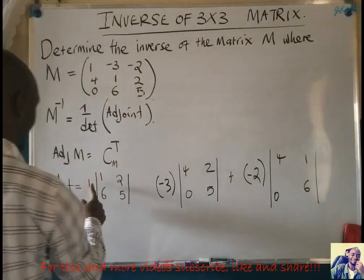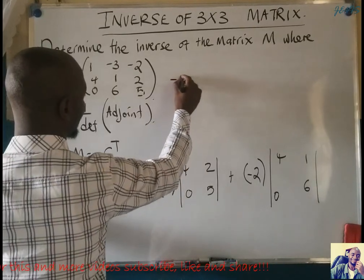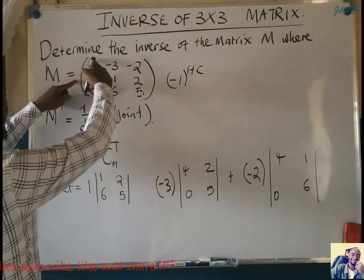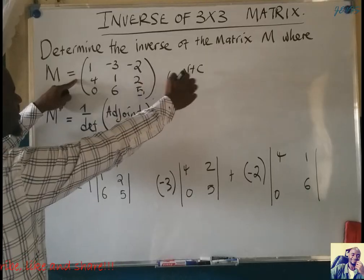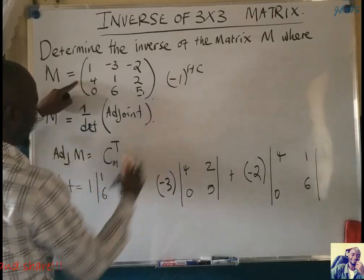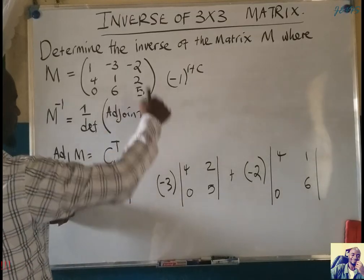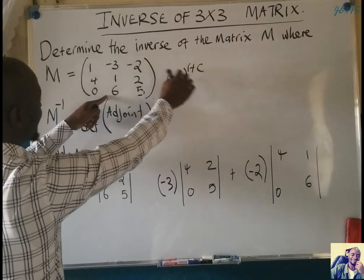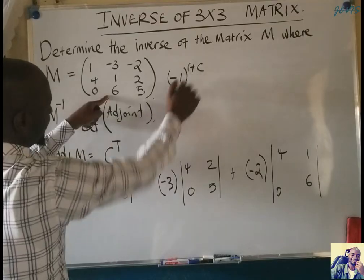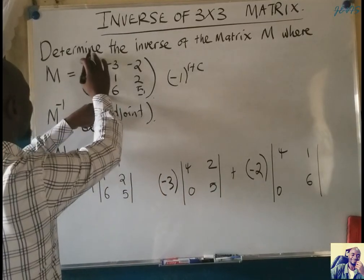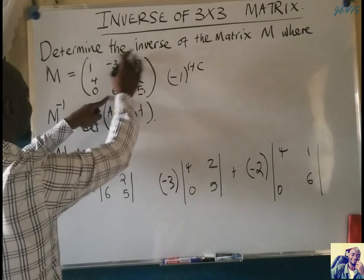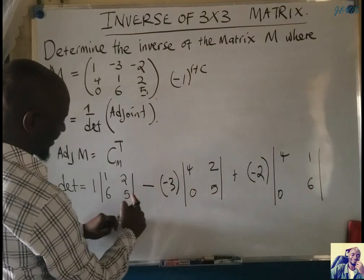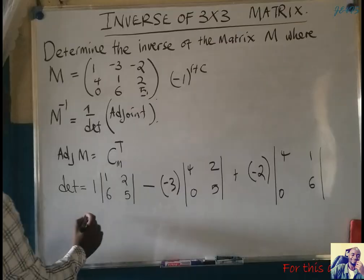Each term has a sign factor of negative one to the power of row plus column. At position row one, column one, that's one plus one equals two, so negative one to the power two is positive. At row one, column two, it's negative one to the power three, which is negative. So this pattern gives: positive, negative, positive, negative, positive, negative, and so on. That's why we introduced this negative sign.